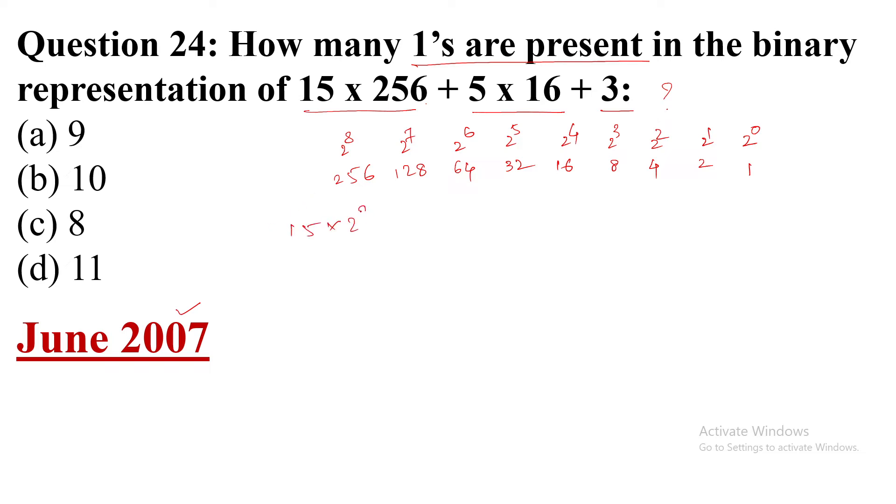15 × 256, that means 15 × 2^8, plus 5 × 16, that means 5 × 2^4, plus 3 × 1, that means 3 × 2^0.